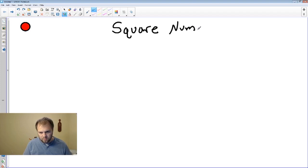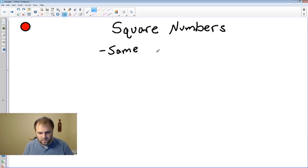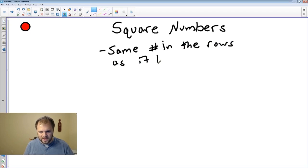How do we find square numbers? Well, a square number is very simple. It's a number that when you're making an array—we use arrays for example—it's a number when making an array that has the same number in the rows as it has columns. So the rows and columns are the same.